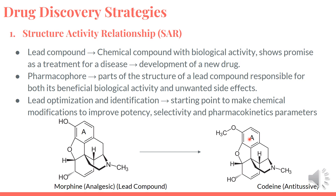Structure-activity relationships are usually determined by making minor changes to improve potency, selectivity, and pharmacokinetics to the structure of a lead to produce analogues and assessing the effect these structural changes have on biological activity. For example, morphine, which is a lead compound and also a powerful analgesic, and its analog codeine, which is an anti-tussive.